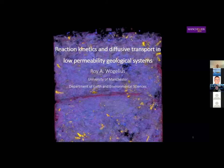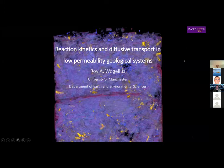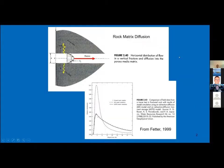I want to take a massive step backwards because what I'm going to talk about is looking at a much larger process than what's been discussed so far. I'd like to discuss the way that reaction kinetics — not just diffusion as a kinetic process, but how actual chemical reactions involving precipitation and dissolution — can have an impact on diffusive transport in low permeability geological systems.